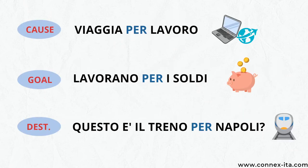In the next three examples, 'per' tells you the reason, the goal, or the destination. 'Viaggia per lavoro' — he travels for work; here the work is the cause of the travelling. 'Lavorano per i soldi' — they work for money, where money is the objective. 'Questo è il treno per Napoli' — is this the train for Naples? In this case, Napoli is the final stop, the destination.